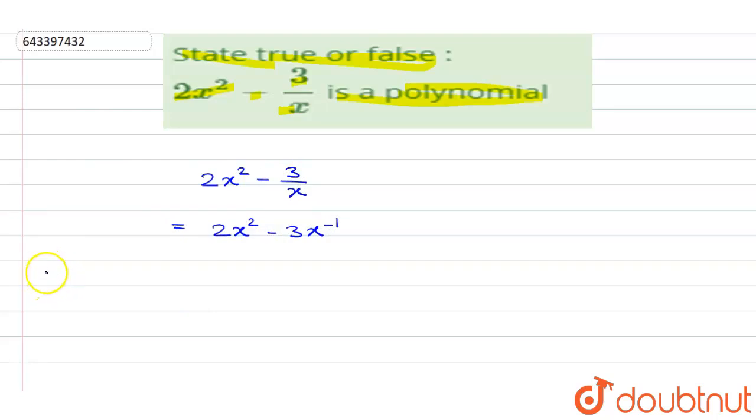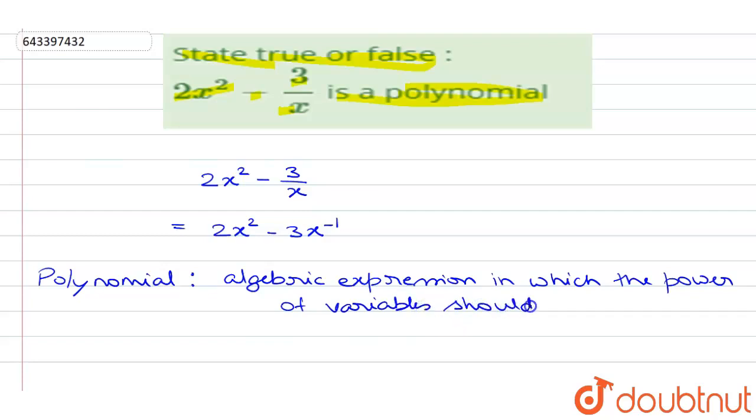Now coming to the definition of polynomial. The polynomial is defined as an algebraic expression in which the power of variables should be whole number.